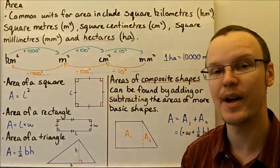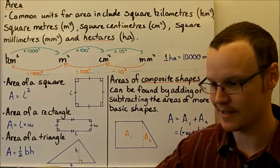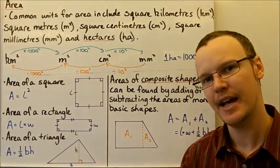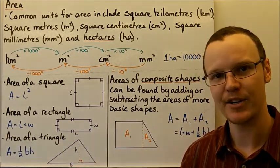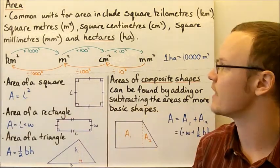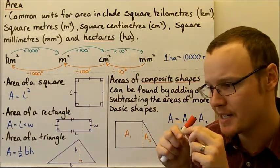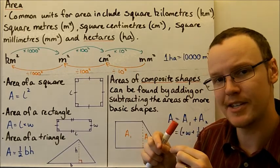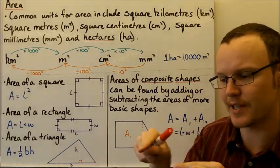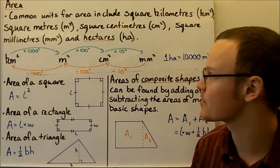One square metre is one metre by one metre — one metre along one direction and a metre along another direction to encompass a full area. Likewise, one square centimetre is one centimetre in one direction and one centimetre in another direction to make a little square, a one-centimetre square.